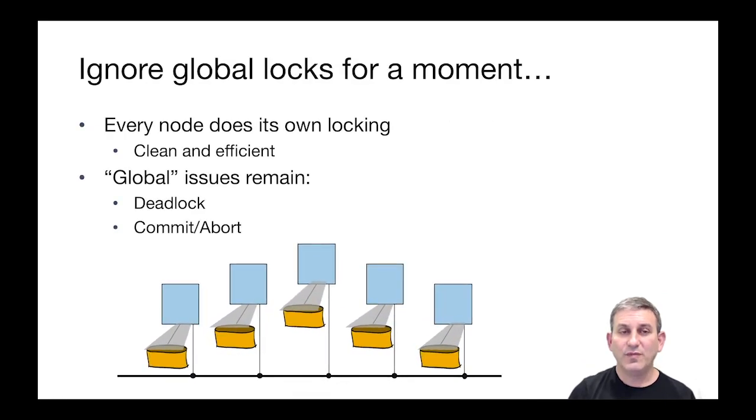Now, ignoring the global locks for a moment, every node is going to do its own locking for its local locks. When it locks a tuple, it's going to lock it locally. When it locks a page, it's going to lock it locally. This is simple, it's efficient, and it actually just reuses the code we already had for single node databases in the straightforward way.